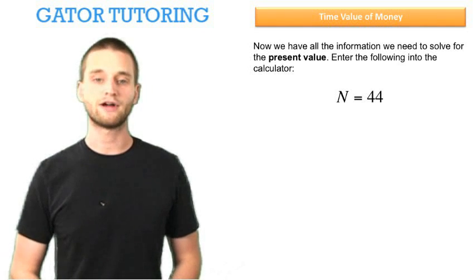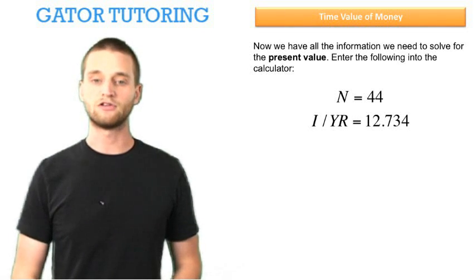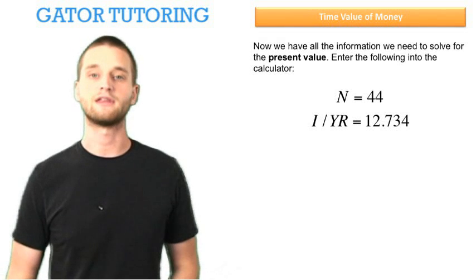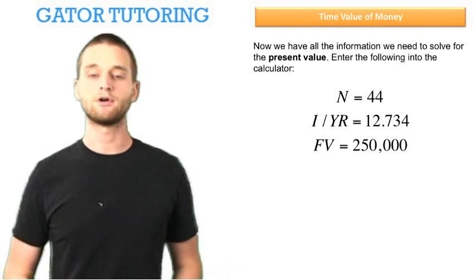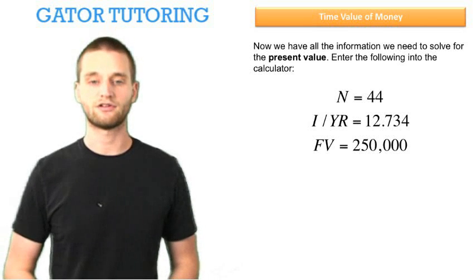So, put 44 in for N after you've done that, put in 12.734% for the interest per year, which we found out in the last part, and put in $250,000 as the future value.